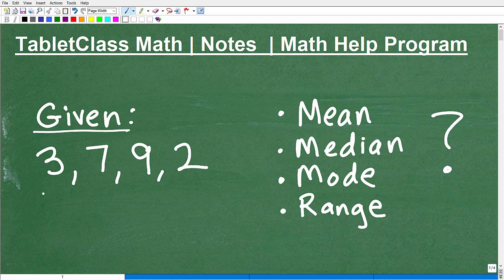Okay, so given the numbers 3, 7, 9, and 2, we want to find the mean, median, mode, and range. This is very important.